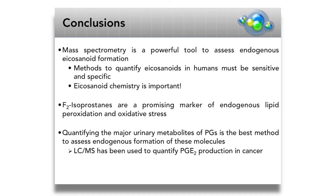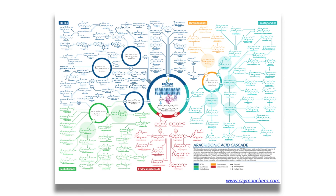What I want to leave you with is that arachidonic acid oxidation is very complex — we've only been able to look at the tip of the iceberg today. There are many classes of compounds we were not able to discuss due to limited time. This area has great potential for elucidation of clinical biomarkers, but we must be vigilant in analyzing these compounds using mass spectrometry and sensitive, specific, robust methods.